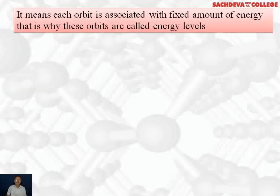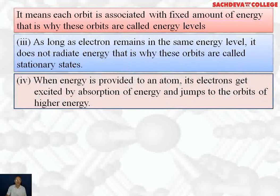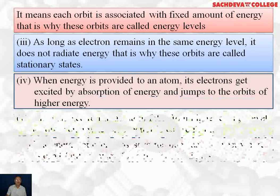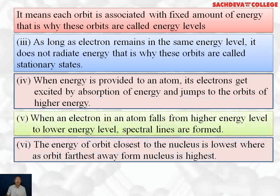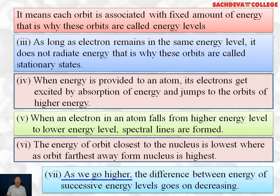Next point, it means that each orbit is associated with fixed amount of energy. That is why these orbits are called energy levels. As long as the electron remains in the same energy level, it does not radiate energy. That is why these orbits are called stationary states. When energy is provided to an atom, its electrons get excited by absorption of energy and jump to the orbits of higher energy. When an electron falls from higher energy level to lower energy level, it radiates energy and we observe spectral lines. The energy of orbit closest to the nucleus is lowest, whereas orbit furthest away from the nucleus is highest. As we go higher, the difference between energy of successive energy levels goes on decreasing.